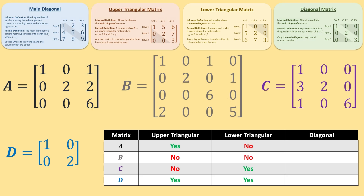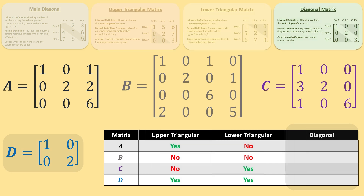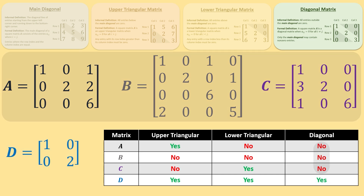Now that we have determined if any of these matrices are upper or lower triangular, we look to see if any matrix is both upper and lower triangular to find our diagonal matrices. This is the only matrix that is both upper and lower triangular, so it is the only diagonal matrix. All of the others are not diagonal matrices since they at most only satisfy one of the upper or lower triangular conditions.